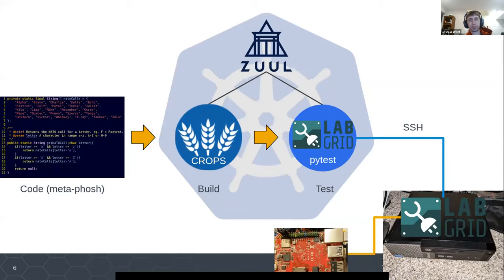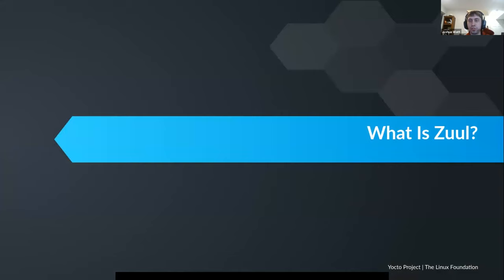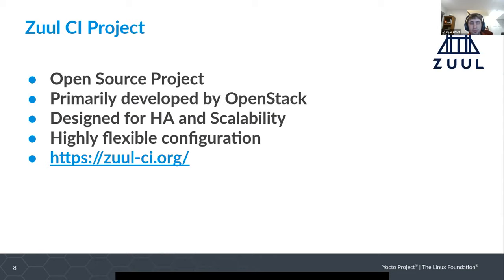Running all this stuff in Kubernetes gives you a lot of advantages — the high availability and scalability that Kubernetes offers, because it's designed to do those kinds of things. So what is Zuul? Zuul is an open source project primarily developed by OpenStack, though there are a bunch of other people involved, and it is designed from the ground up to be high availability and scalable, so it pairs pretty well with Kubernetes.